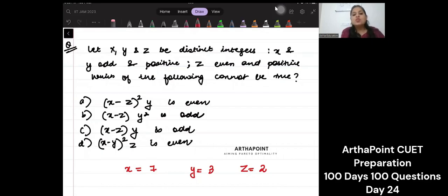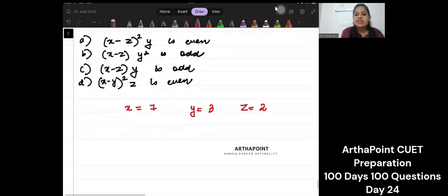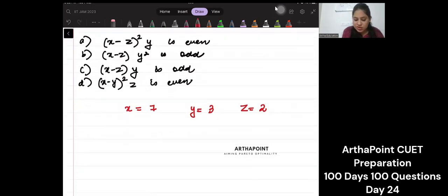So now it says which of the following cannot be true. Let's take the first one: (x-z)² times y. So 5 squared into 3, so 25 into 3. This is odd.